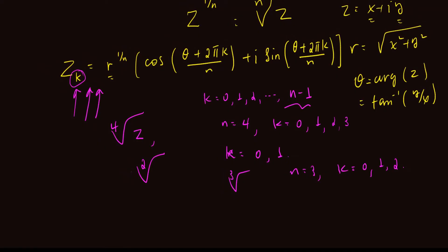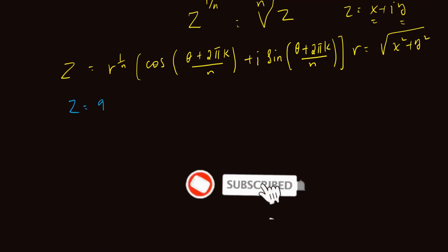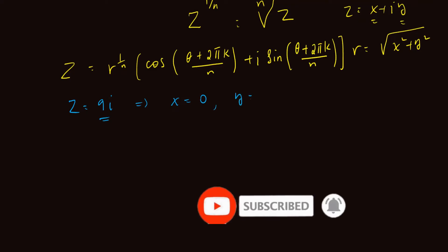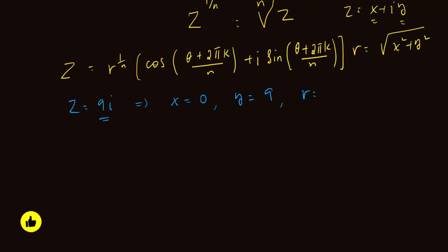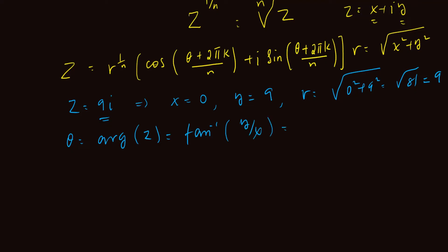We need to find the modulus r and the principal angle theta using these two formulas. For equation number six, find the square root of 9i. The real part is zero and the imaginary part y is nine. So r equals the square root of x squared plus y squared, which is the square root of 0 squared plus 9 squared, which is the square root of 81, so r is 9. The principal argument theta is tan inverse of y over x, but since x is zero, the value doesn't exist — tan is undefined when the angle is pi over 2.